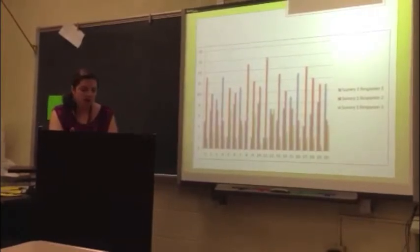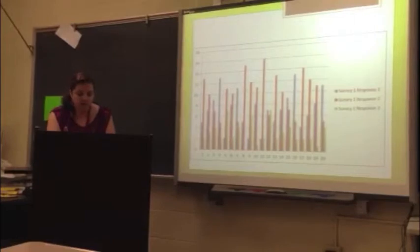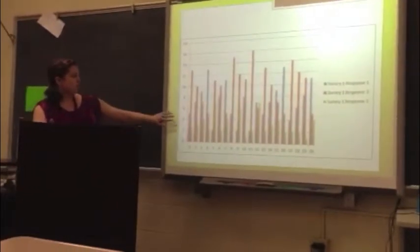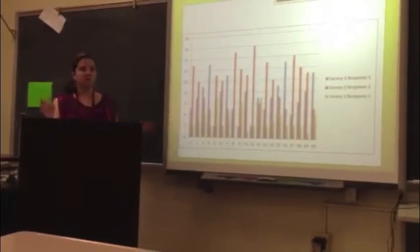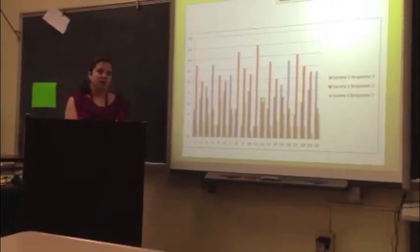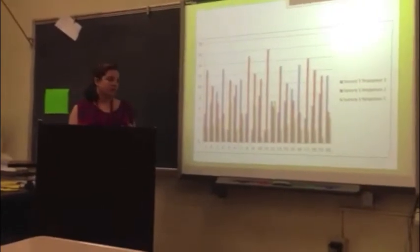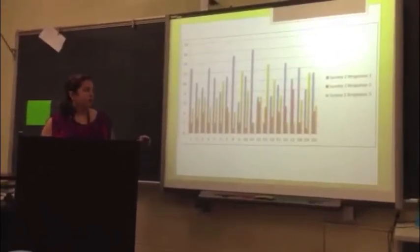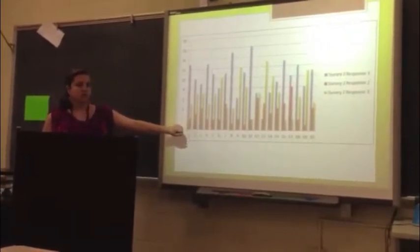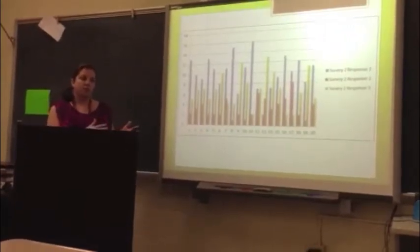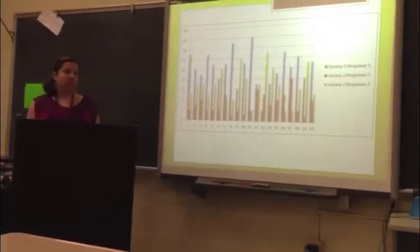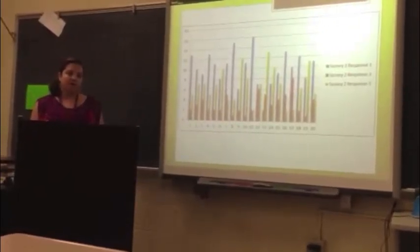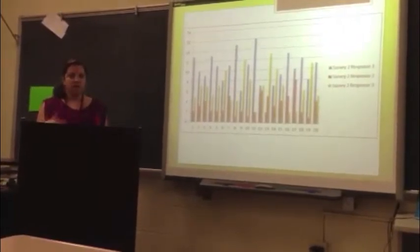Responses were recorded and compared in a graph, which clearly demonstrated a difference in opinion after the direct instruction lesson. In the initial survey, the overwhelming majority of students chose response two — sometimes agree — meaning most were in the middle and unsure. After the direct instruction lesson on Flannery O'Connor, responses one and three were chosen overwhelmingly over response two, meaning students were polarized — either definitely for or definitely against the moral questions. This clearly indicates they had a better understanding of their own moral code and were able to understand the material more clearly.